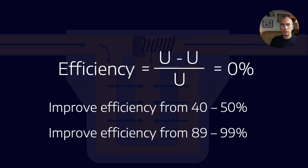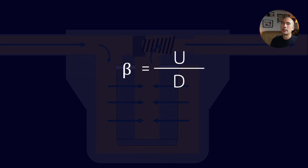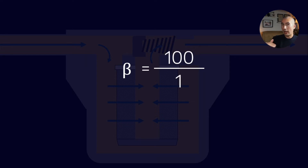We really want a measure which in a non-linear way rewards the top end of filter performance, and that's something the beta ratio allows us to do. It also helps categorize different filters — the number is not going to be linear, and the bigger the number the better the filter performance. The beta ratio is actually pretty easy: you just take the number of particles upstream divided by the number of particles downstream.